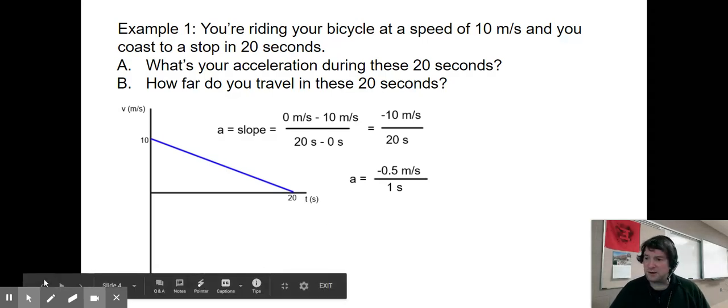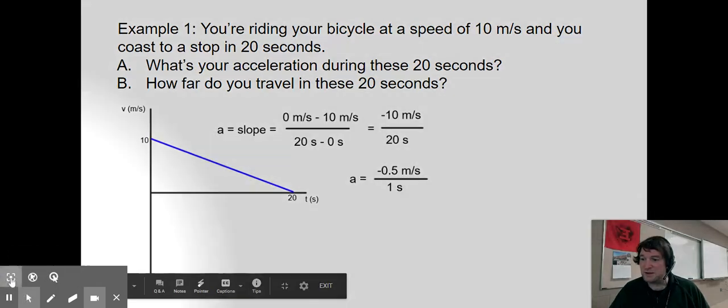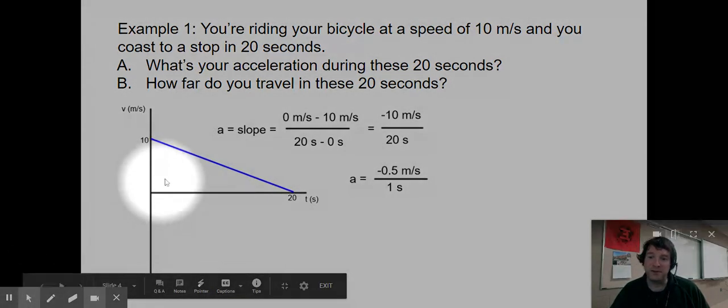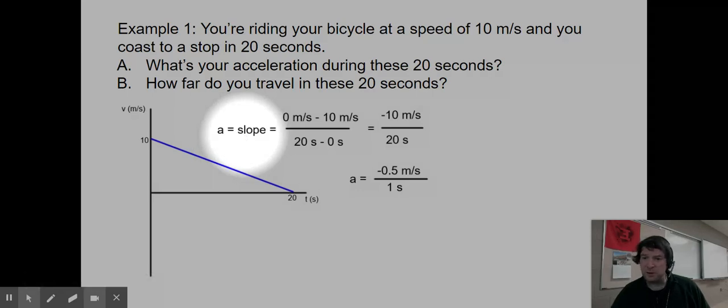Now, in order to find the acceleration, we know that acceleration is the slope of a velocity versus time graph. So I'm going to look at the slope. Now, looking at my starting, I started at 10 meters per second, and I drew a line that slopes down at a time of 20 seconds is when I reached zero meters per second.